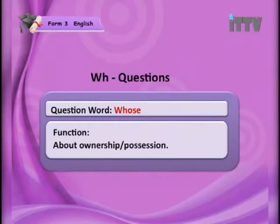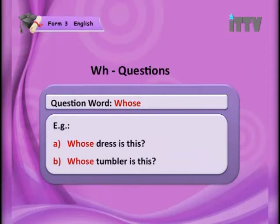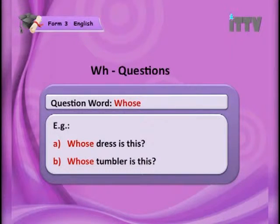Next is 'whose'. The function of 'whose' is to find out about ownership or possession. For example: 'Whose dress is this?' — you want to find out who is the owner of the dress. Another example: 'Whose tumbler is this?'